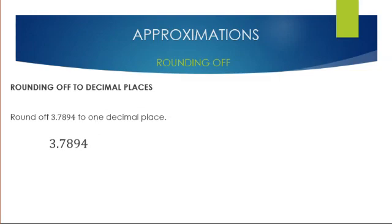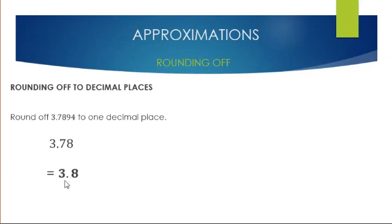Since we've been given the accuracy of 1 decimal place, we'll only concentrate on the second and first decimal places to help us round off this number, meaning we'll only focus on 3.78. We then use the principle of rounding off: we look at the following decimal place and see if it is bigger than 5. In this case, 8 is bigger than 5, so we add 1 to our first decimal place and our rounded off answer will be 3.8.